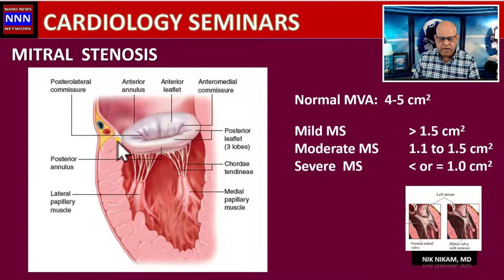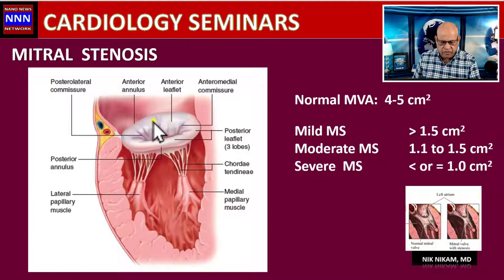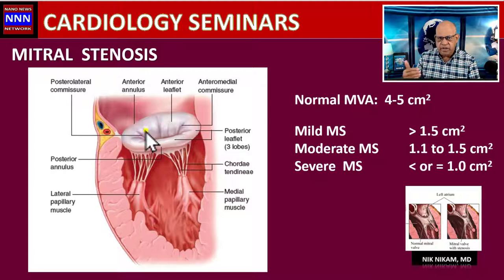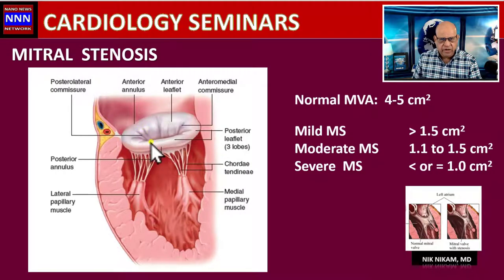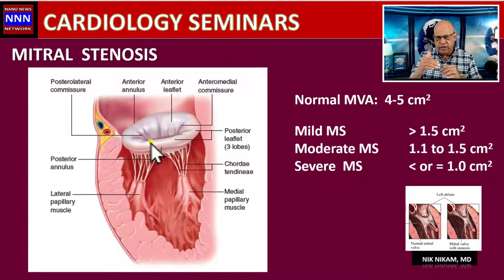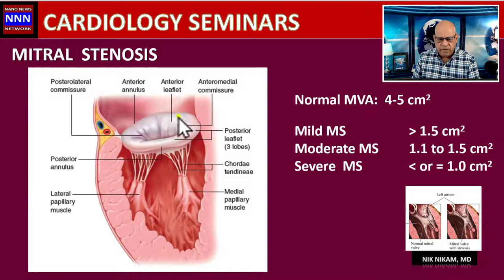The mitral valve has leaflets — the anterior and the posterior leaflets — which are anchored to the papillary muscles through the chordae tendineae. The anterior leaflet has three scallops: A1, A2, A3, and the posterior leaflet has P1, P2, P3. These scallops come to approximation during closure of the mitral valve. The mitral valve ring itself is not a flat circle; it is saddle-shaped, with the highest points anteriorly and posteriorly, and lower points on the lateral and medial sides.